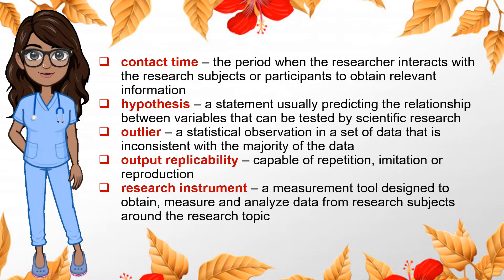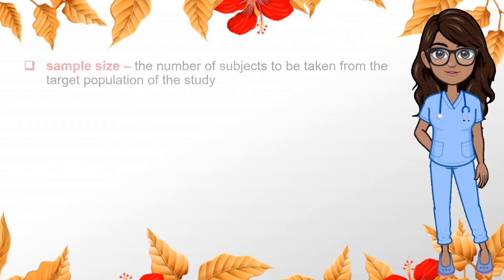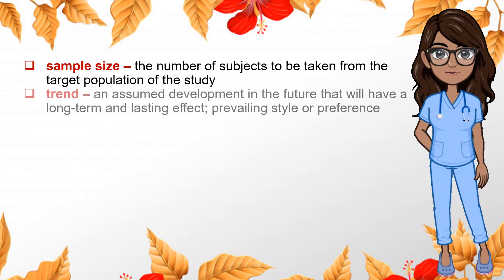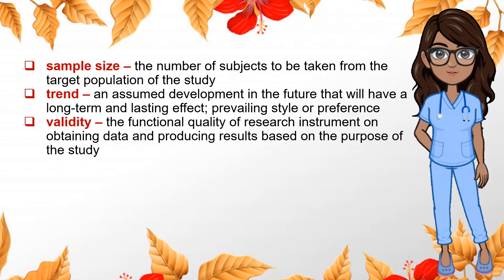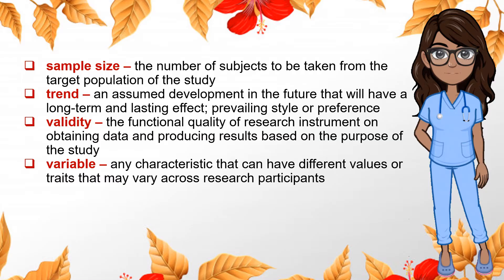Fifth, research instrument — a measurement tool designed to obtain, measure, and analyze data from research subjects around the research topic. Next, sample size — the number of subjects to be taken from the target population of the study. Next, trend — an assumed development in the future that will have a long-term and lasting effect, or prevailing style or preference. Next, validity — the functional quality of a research instrument in updating data and producing results based on the purpose of the study. Next, variable — any characteristic that can have different values or traits that may vary across the research participants.